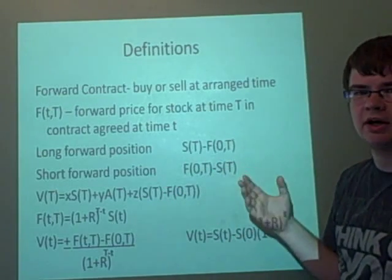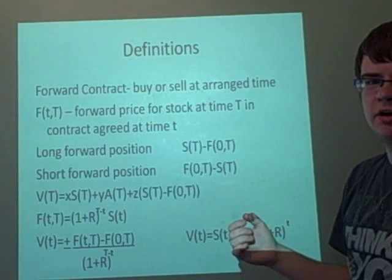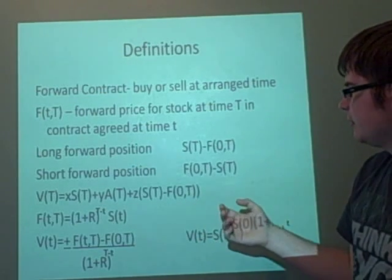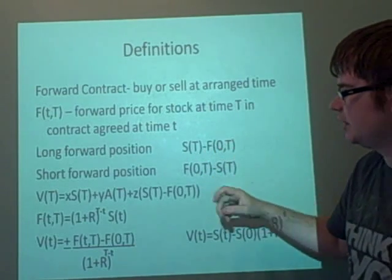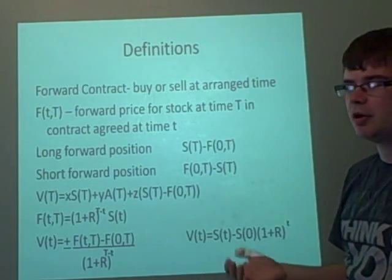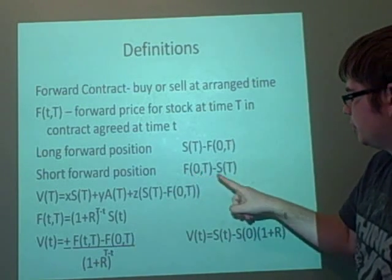If you want to work out how much money we've made in a long forward position where we've bought something, then we have Stock minus the Forward Price. In a short forward position where we've borrowed something, we have the other way around, which is the Forward Price minus the Stock.